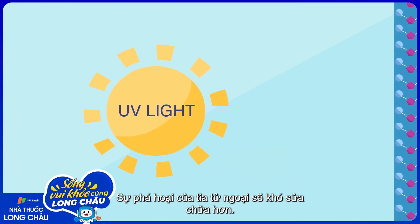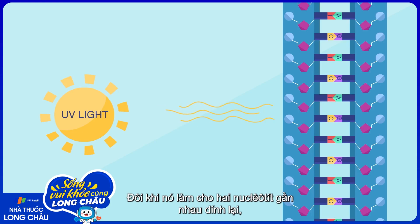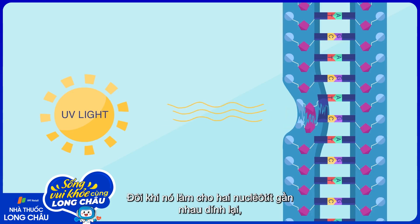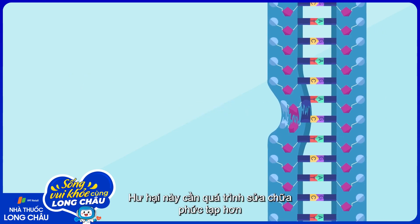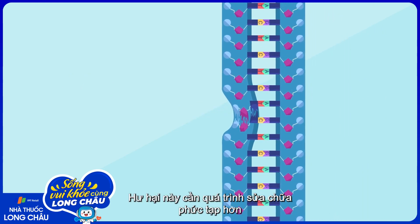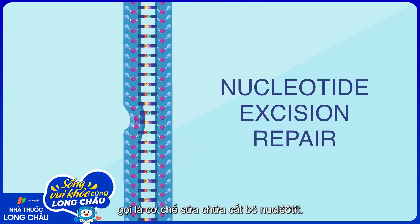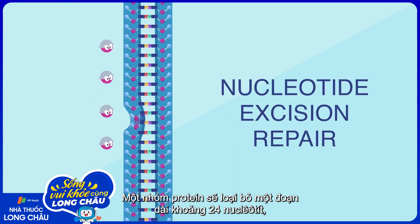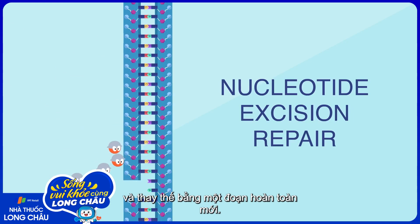UV light can cause damage that's a little harder to fix. Sometimes it causes two adjacent nucleotides to stick together, distorting the DNA's double helix shape. Damage like this requires a more complex process called nucleotide excision repair. A team of proteins removes a long strand of 24 or so nucleotides and replaces them with fresh ones.